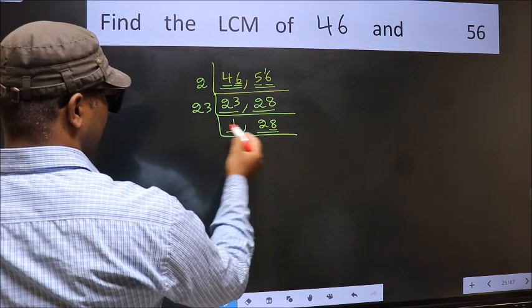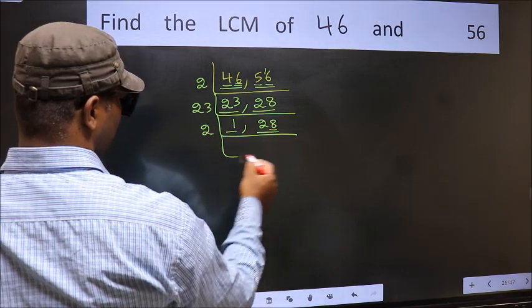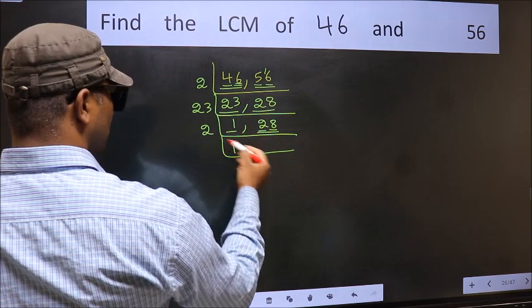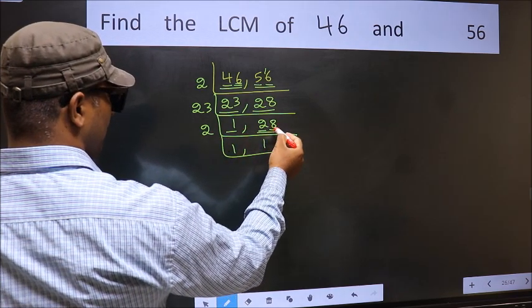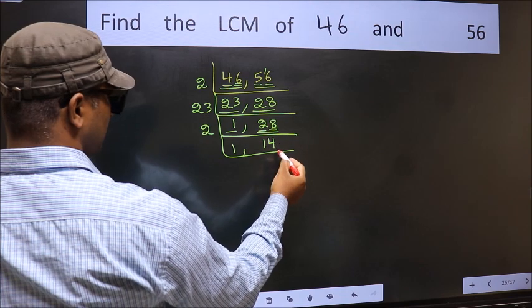Last digit 8, so take 2. First number 2, when do we get 2 in the 2 table? 2 times 1 is 2. The other number 8, when do we get 8 in the 2 table? 2 times 4 is 8.